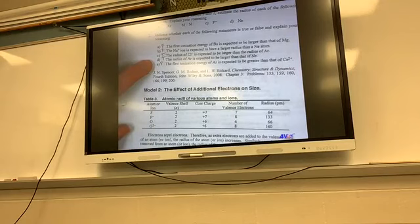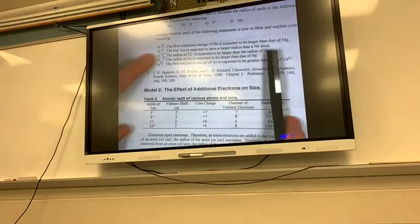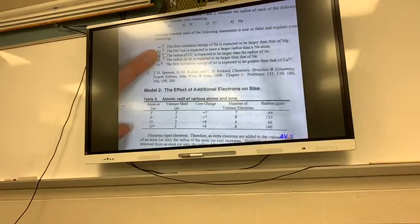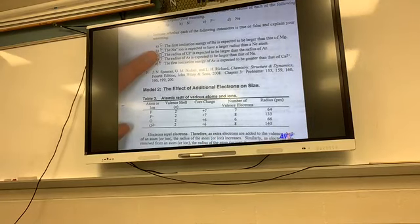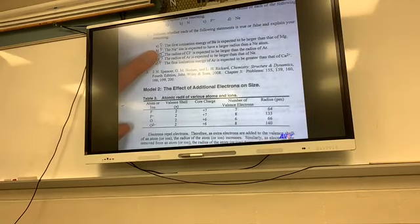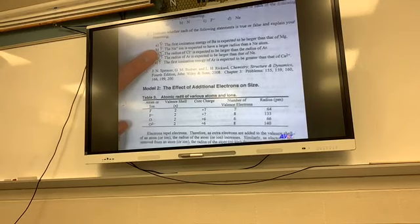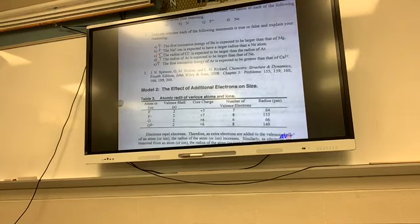Flip it. Number two, question B. The Na+ ion is expected to have a larger radius than the Ne atom. So the Na+ ion means it lost one electron, which means it has the same amount of electrons as neon. But it has more protons. More protons pulling on the same electrons. Why do electrons repel each other? Like charges repel.